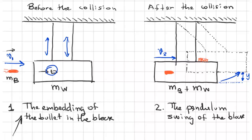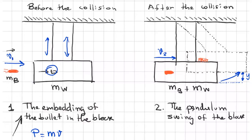And because of this, the momentum is conserved. We know that by definition the momentum P is equal to the mass of the particle or of the system multiplied by the velocity. This quantity is conserved on this part of the problem. On the other hand, the mechanical energy is not conserved, because when the bullet embeds in the block, some thermal energy is generated inside the block, so the energy is not totally conserved on this part of the problem.